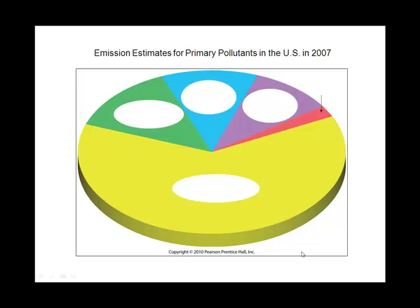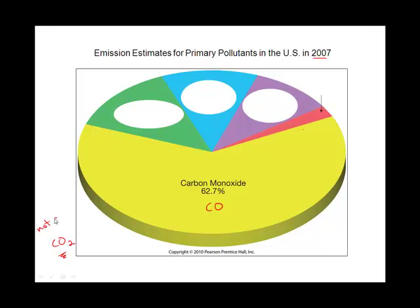Looking at primary pollutants for the United States in 2007, not surprisingly the first one is carbon monoxide. In the next chapter when we talk about changing climate and surface temperature, we'll talk about carbon dioxide. Notice that carbon dioxide is actually a primary product when you burn fossil fuels — it is not in and of itself a pollutant. Carbon monoxide is by far the major pollutant that we put out.